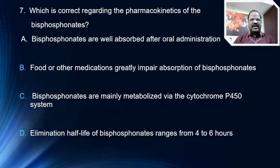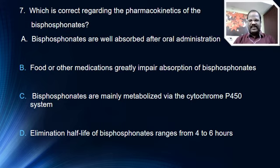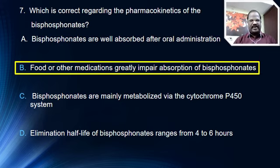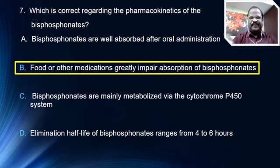Question number 7: which is correct regarding the pharmacokinetics of bisphosphonates? Options are: bisphosphonates are well absorbed after oral administration; food and other medications greatly impair absorption of bisphosphonates; bisphosphonates are mainly metabolized via cytochrome P450; elimination half-life ranges from 4 to 6 hours. The right answer is option B. Bisphosphonates are poorly absorbed from oral routes, and food and other medications definitely impair absorption.